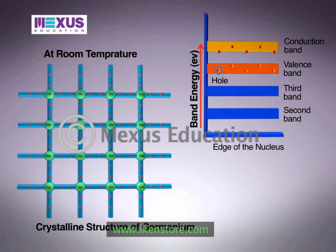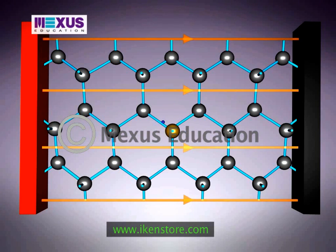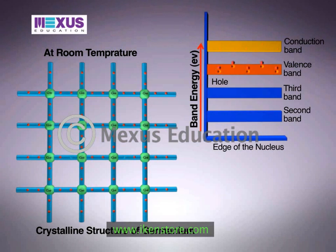Thus, an electron-hole pair is produced. If a potential difference is applied across a semiconductor, current will flow through the external circuit. Electrons and holes flow in opposite directions in an electric field, though they contribute to the current in the same direction since they are oppositely charged. This type of semiconductor, where the conductivity is due to the movement of electrons and holes, is called the intrinsic semiconductor.